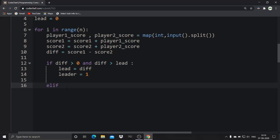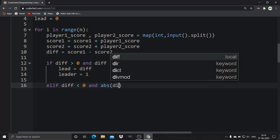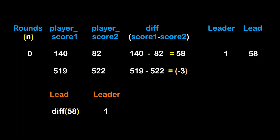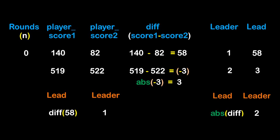What if player two has a greater score than player one? The condition would be: elif difference < 0 and abs(difference) > lead. If difference is less than zero, player two has more points. Since the result will be negative, Python's abs() method converts negative integers to positive. If abs(difference) is greater than lead, then lead = abs(difference) and leader = 2. At the very first stage these two conditions may be difficult to understand, so let's go through further iterations.